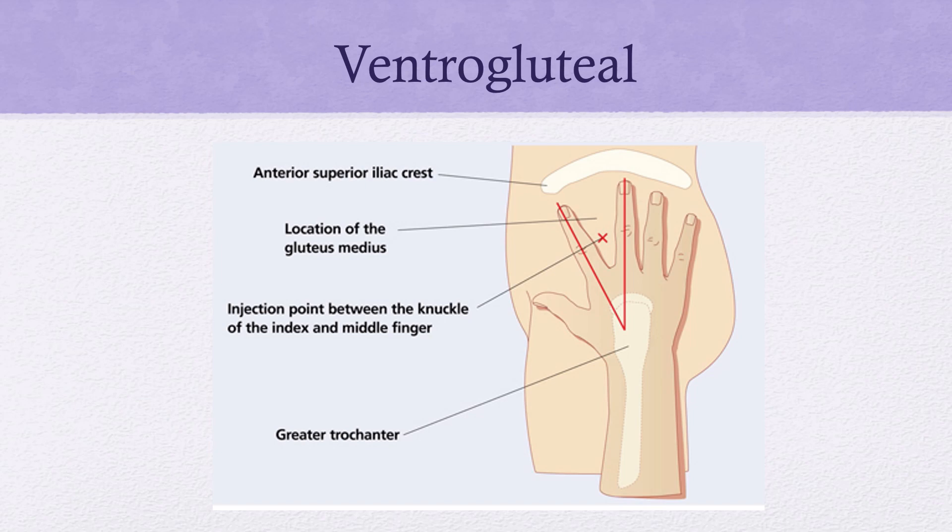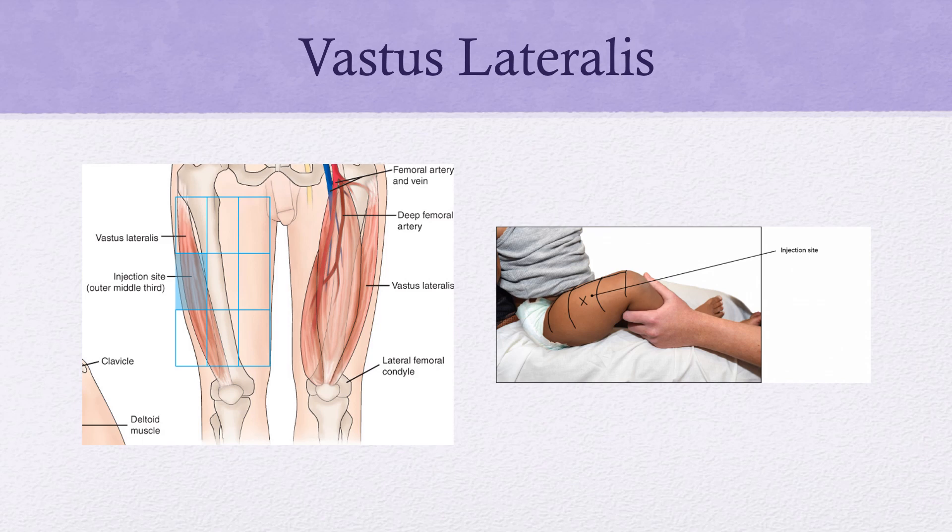Ventrogluteal is the preferred site for adults and adolescents for IM injections up to about 3 mLs. The vastus lateralis is the best location and typically the preferred site for patients less than one year of age, who can handle about 1 mL volume. Average adults or adolescents can take up to 3 mL volumes, using an 18 to 25 gauge needle depending on the viscosity of the solution.